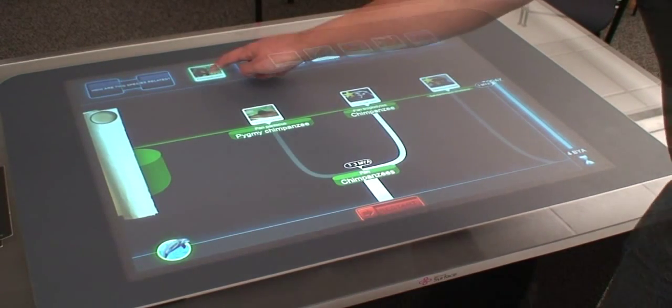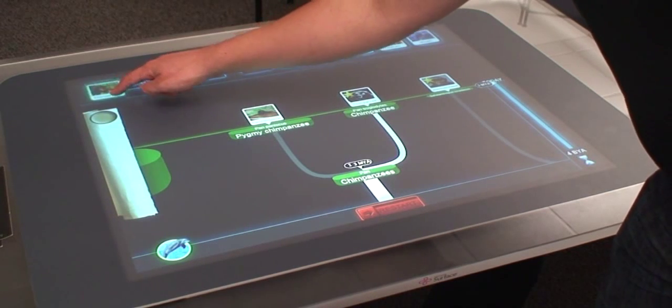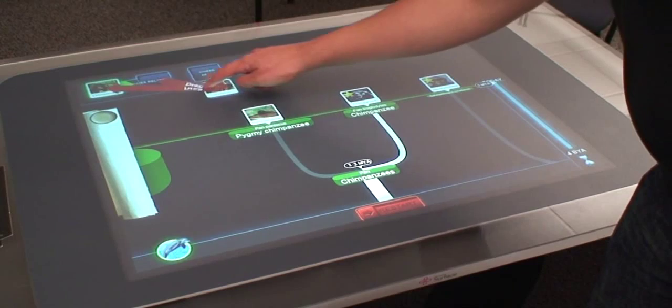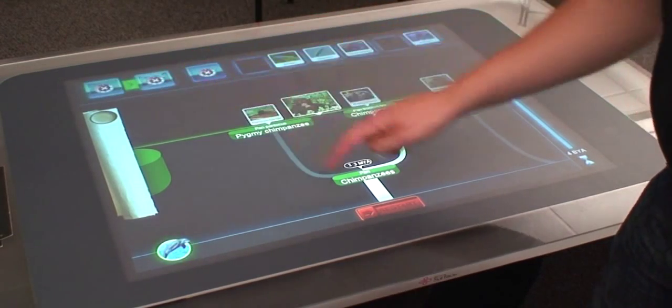Two species can also be compared, which provides information about their common ancestor, when they diverged in time, and what shared traits they have inherited from their common ancestor.